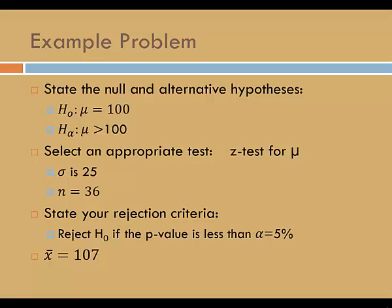Because we know sigma, and our sample size is at least 30, we're fine using a z-test for the mean. We're going to use p-value to make our decision, and in this example we'll use a significance level of 5%. So let's say that we've collected some data, and our sample mean is 107.